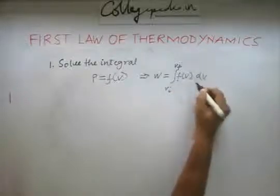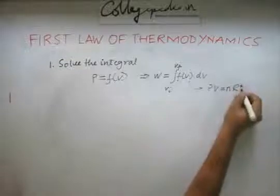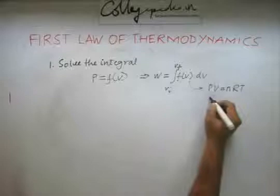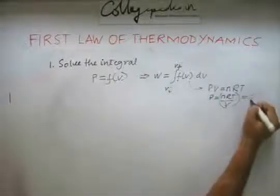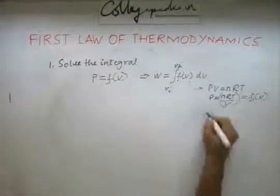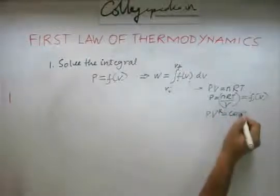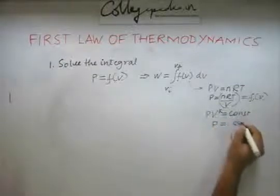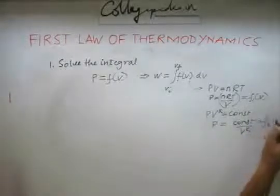Typical examples of this could be, if we look at PV equal to nRT, say the gas is following the ideal gas equation or the equation of state, we can say that P is equal to nRT by V. This quantity is nothing but a function of volume. Similarly, if we have a polytropic process where PV to the power k is a constant, we can say that pressure is again a function of volume as some constant divided by V to the power k. So this is another function of volume.